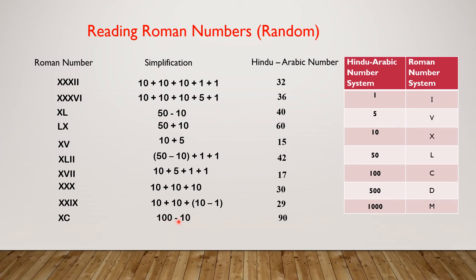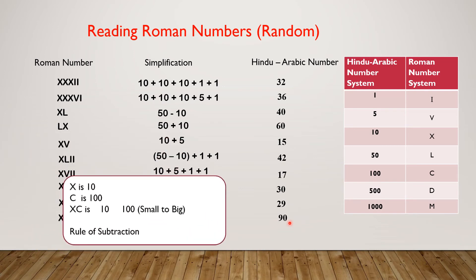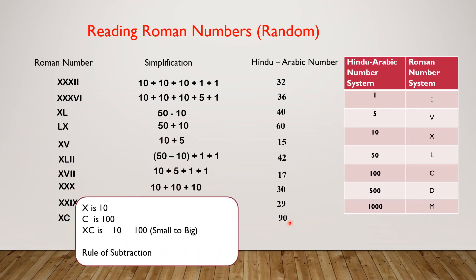XC: simplification 100 minus 10, Hindu-Arabic number 90. X is 10, C is 100. For XC, first we put 10 then 100 — so we are going from smaller number to bigger number. That's why we use the rule of subtraction here.